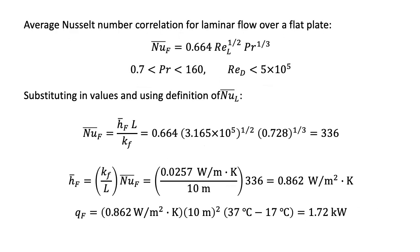First, to find the average convection coefficient for laminar flow, we select a valid average Nusselt number correlation as shown. Substituting in values, we get a Nusselt number of 336, a convection coefficient of 0.862 watts per meter squared kelvin, and a heat transfer rate of 1.72 kilowatts.